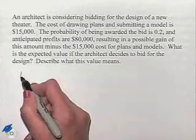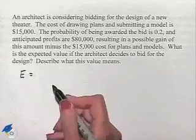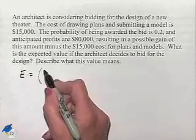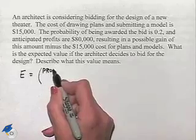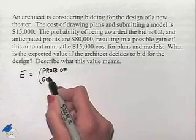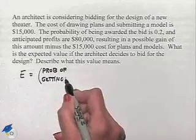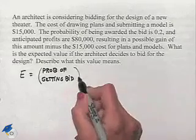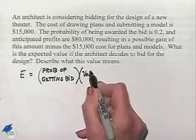We're going to start off by finding the expected value and we'll do it as follows. We're going to take the probability of getting the bid. We'll multiply that probability times the value associated with getting the bid.